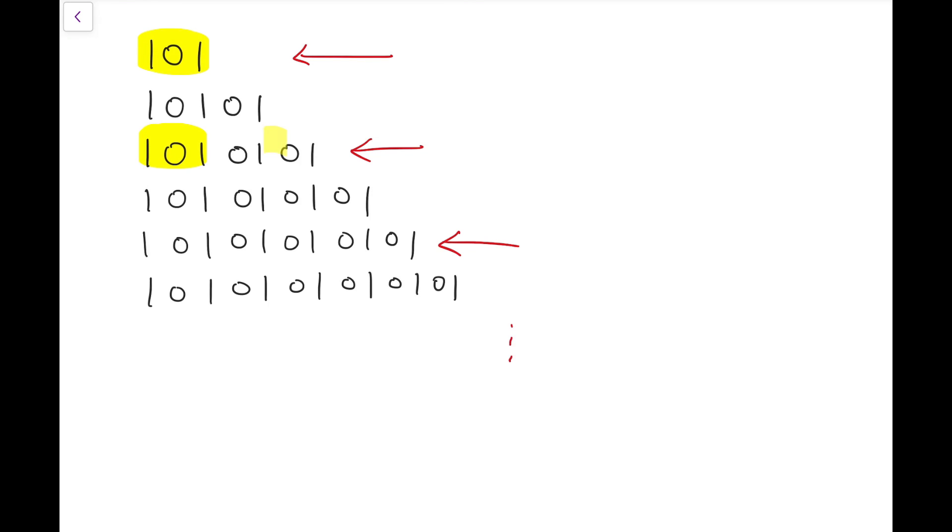Because I can group the 1s and 0s in this way: 101, and then there were 0 in the middle, and then I get 101, and then another 0 in the middle, and then 101.